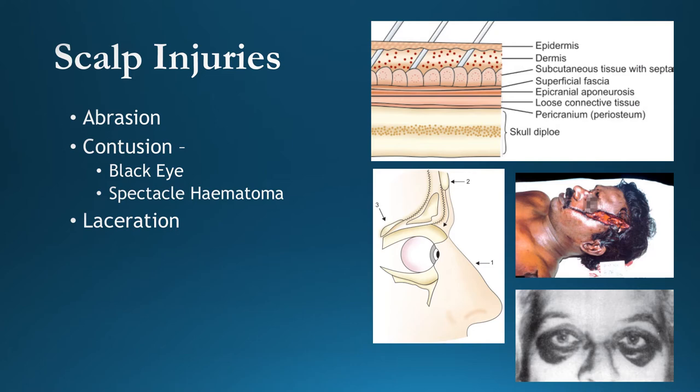Abrasions to the scalp can be seen in traffic accidents, rail accidents, and industrial accidents. However, most scalp abrasions are protected by hair, so if a person has thick hair, abrasions may not occur. If no hair is present, abrasions are expected. To observe the pattern of an abrasion, the head must be shaved.